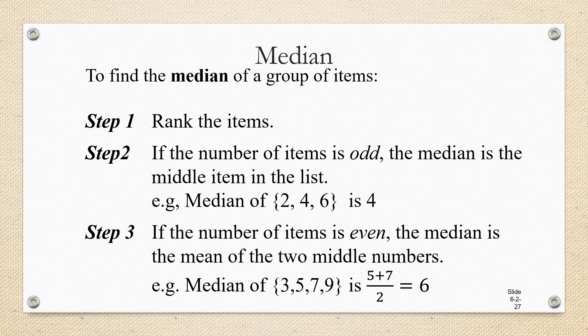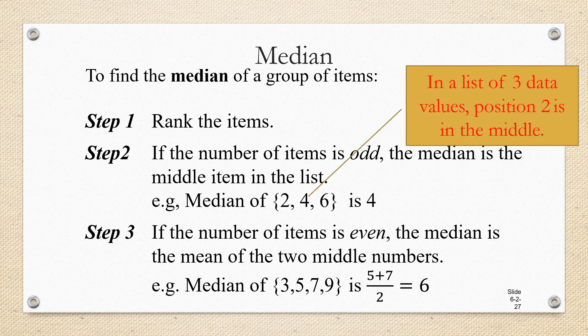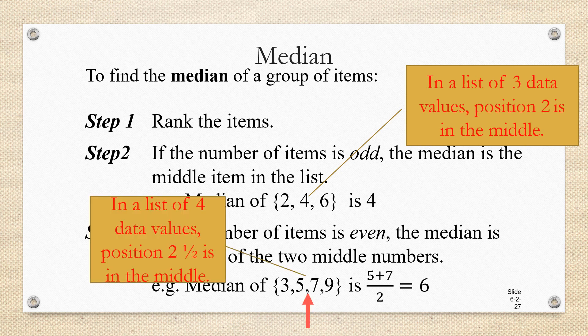In order to come up with a method that works, whether you have an odd number of items or an even number of items, we're going to refer to the position of the median in the set. In this list of three data values, position 2 is in the middle. In this list of four data values, we'll say position 2 and a half is in the middle.